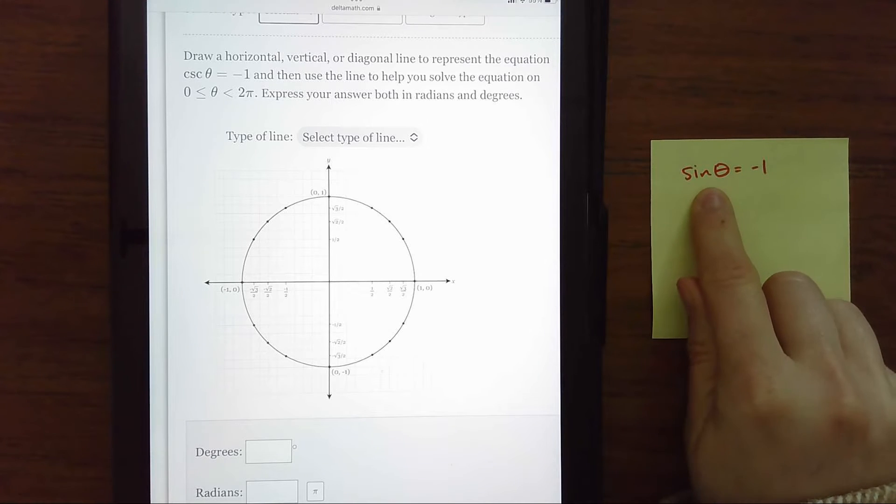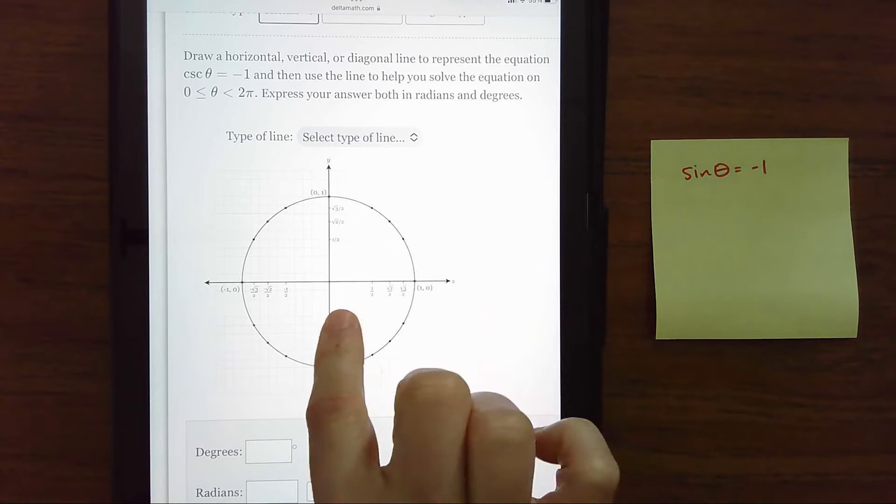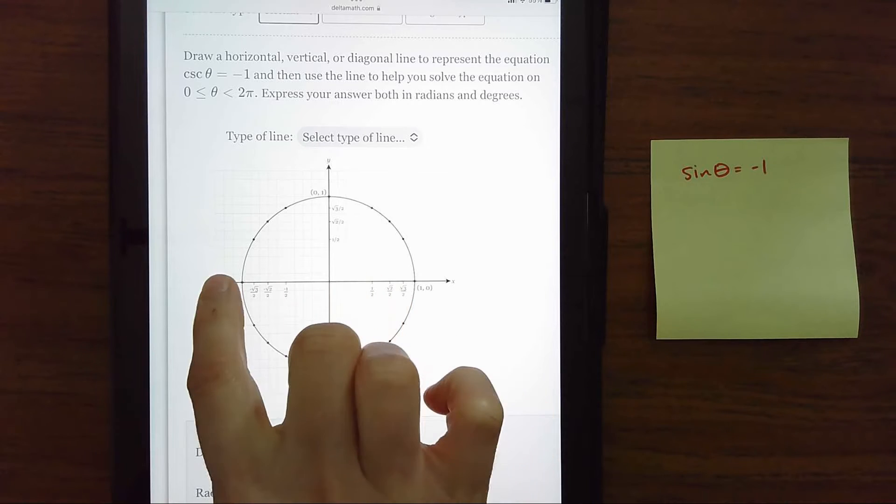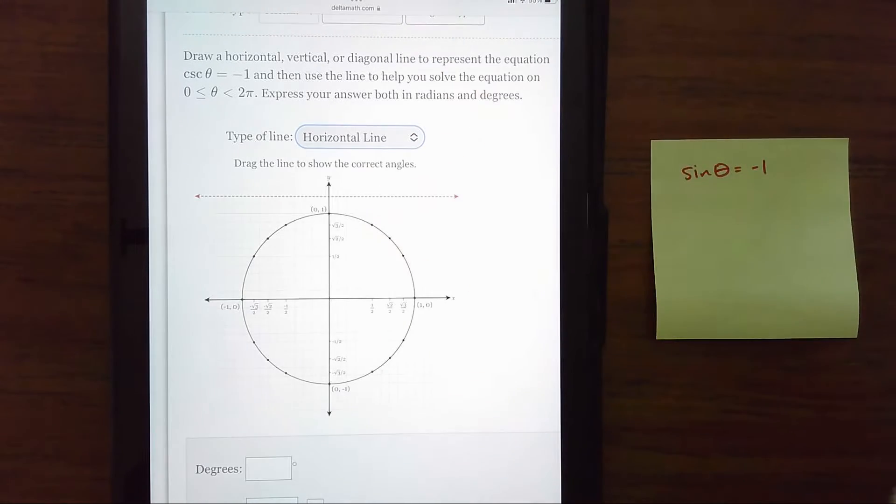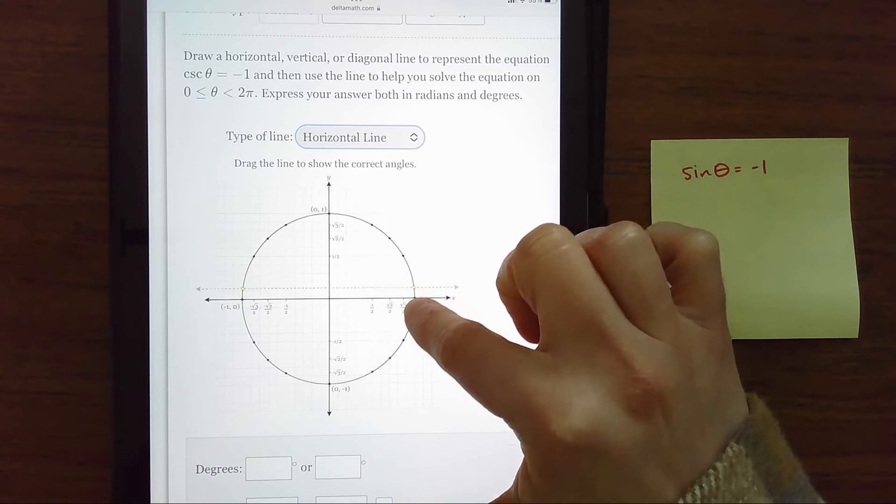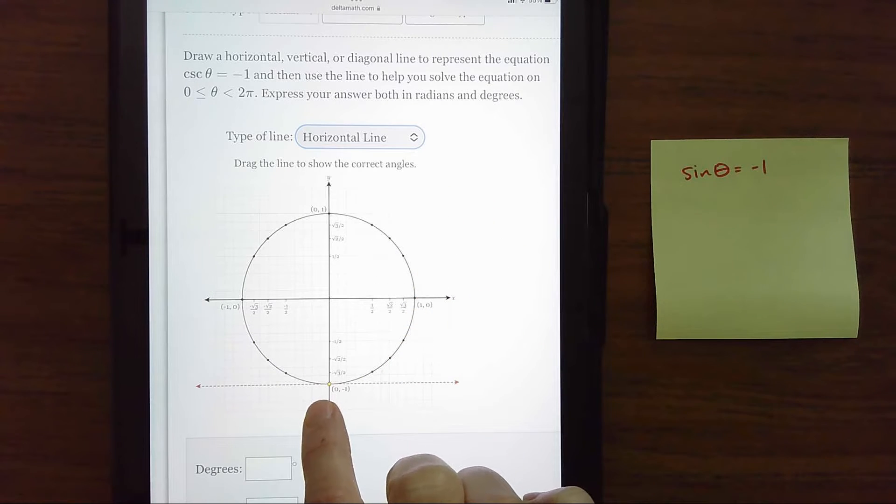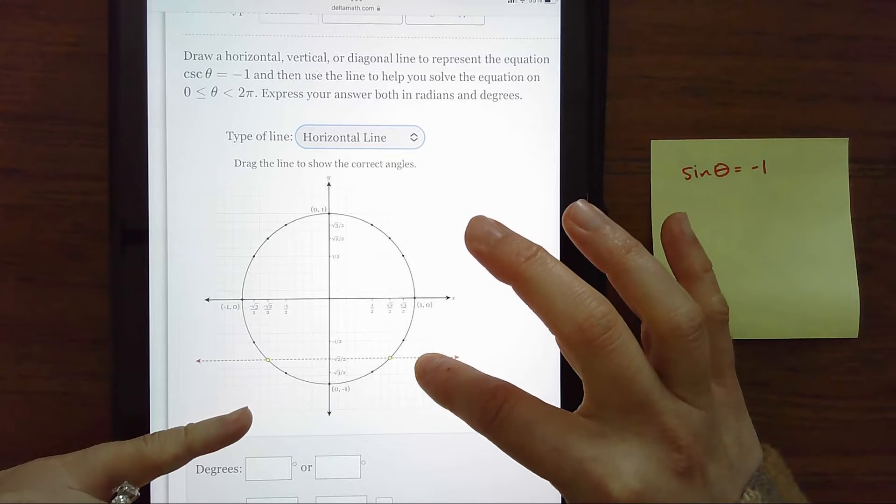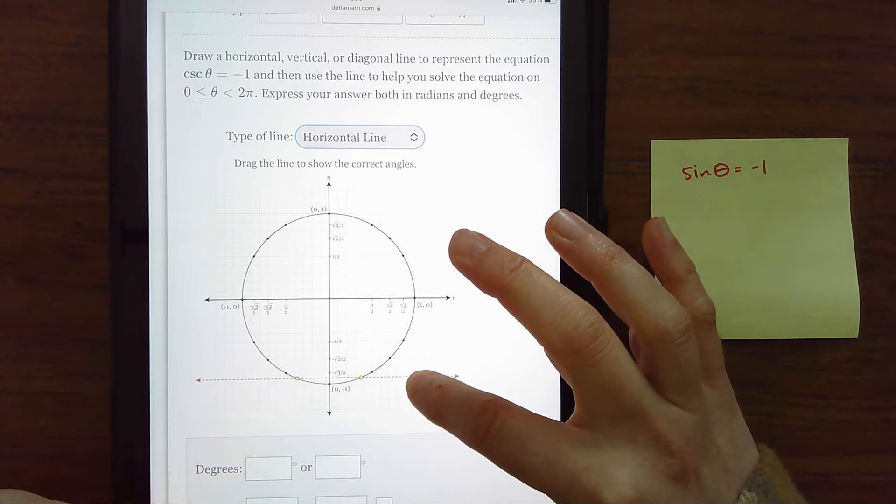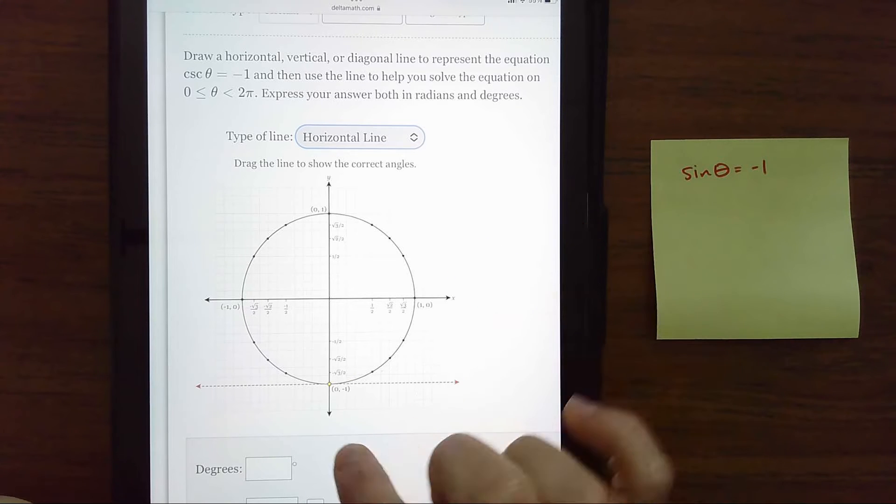And since this is y values, any equation that has y equals a number cuts through the y-axis. So it's a horizontal type of line. And we're just going to drag it until it goes through at negative one, which is all the way down here at the bottom. So it's interesting to see the yellow points are really the angles. There's always two until I get down to this point, and there's only one.